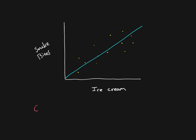The principle here is that correlation does not imply causation. With correlation, we've shown that as one of the variables goes up, there's a predictable, consistent change in the other variable. So as ice cream sales go up, snake bites also go up in a consistent, predictable way.